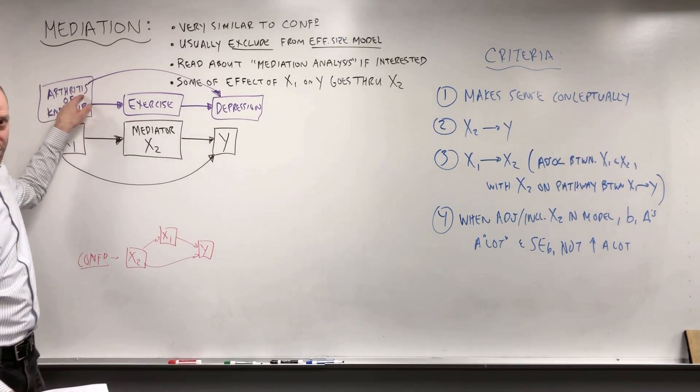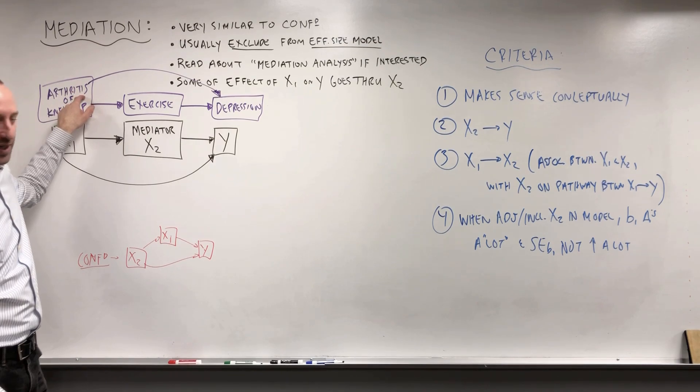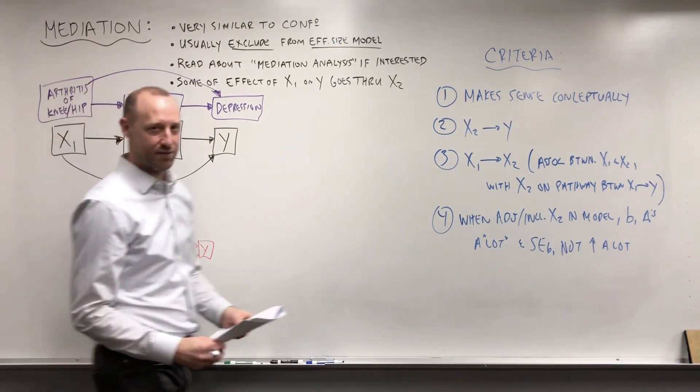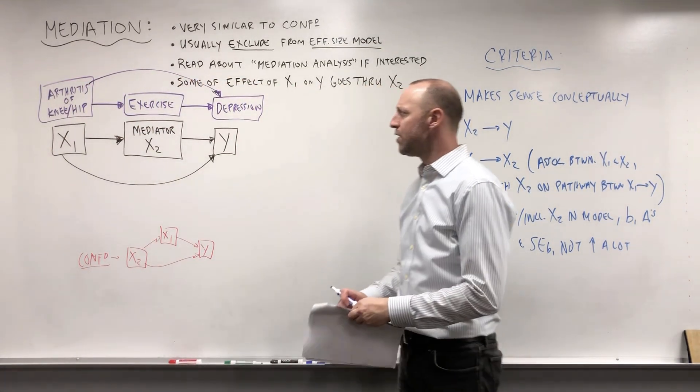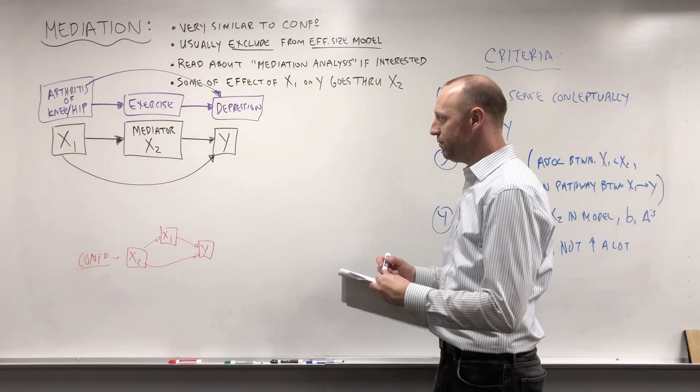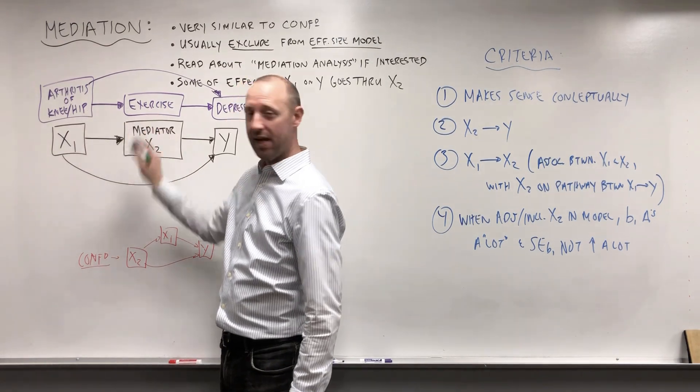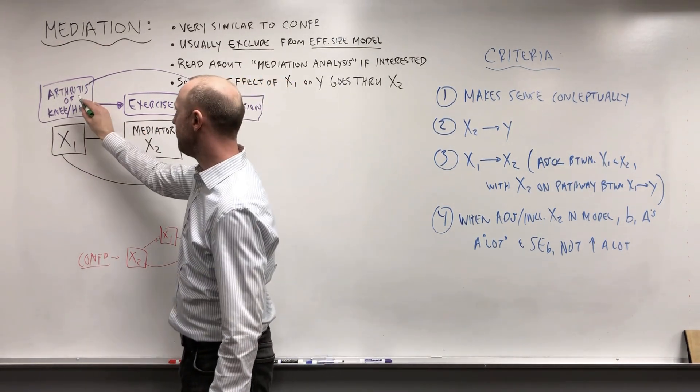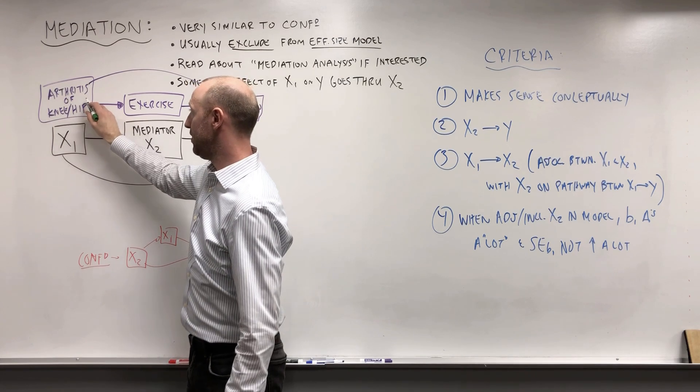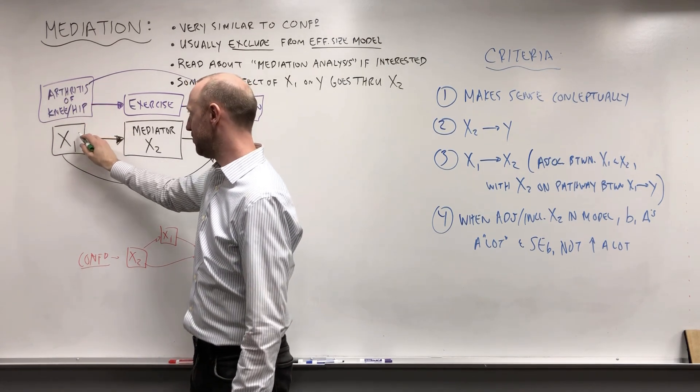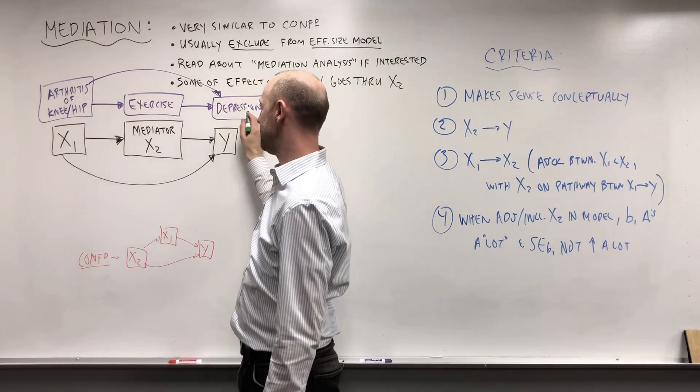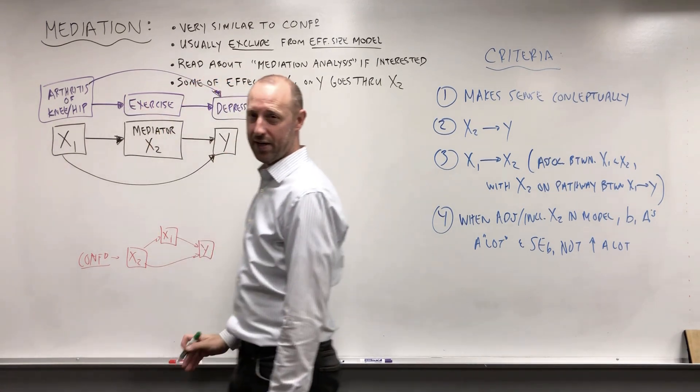So that was the question of interest, right? Does having arthritis in the knee or the hip affect levels of depression? So we can see with mediation, what's going to happen is, including this mediator in the model, some of the effect that our variable of interest, x1, has on the outcome gets taken away by this mediator.